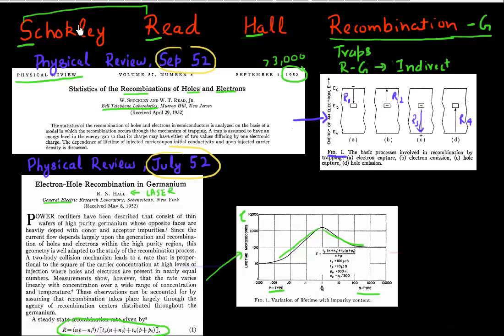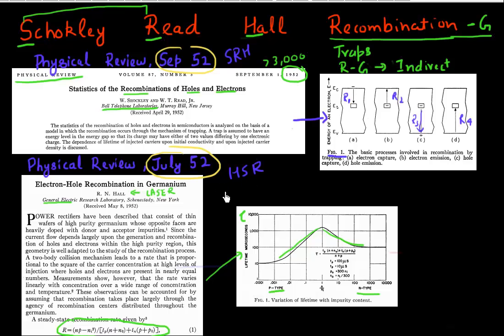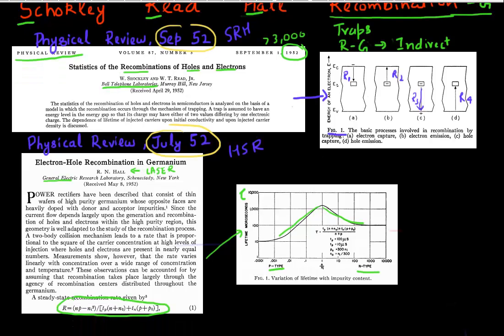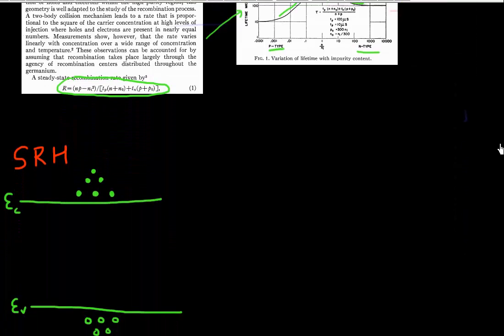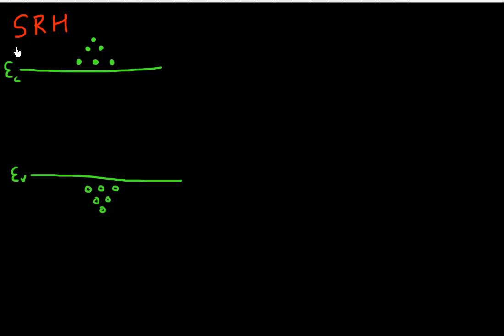Some people who like Shockley call this the SRH formula. And since Shockley was such a polarizing figure, some people might like Robert Hall better, so they call it the HSR formula, giving credit to Hall for deriving it first. The more common and prevalent name is Shockley-Reed-Hall, and I'll call it the SRH formula.